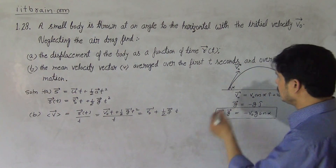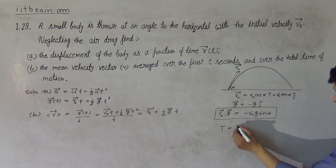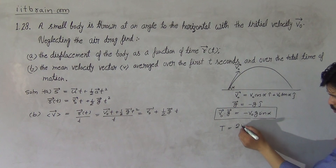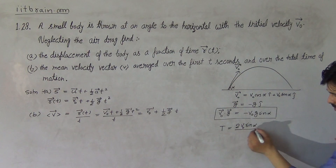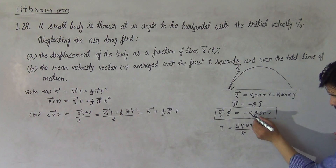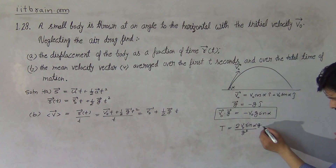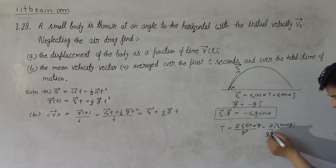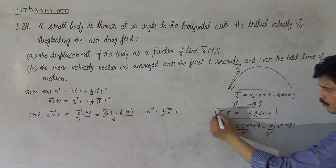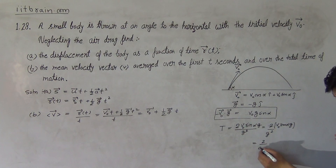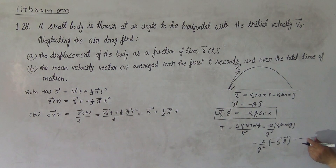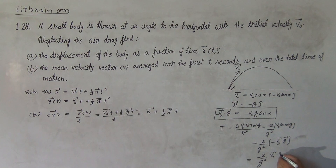For the average over the total time of motion, the total time of a projectile is T = 2v₀sinα / g. To express this using the dot product, if we multiply g in numerator and denominator, it becomes T = 2v₀sinα·g / g². Since v₀sinα = -v₀·g / g (from v₀·g = -v₀g sinα), the total time becomes T = -2(v₀·g) / g².